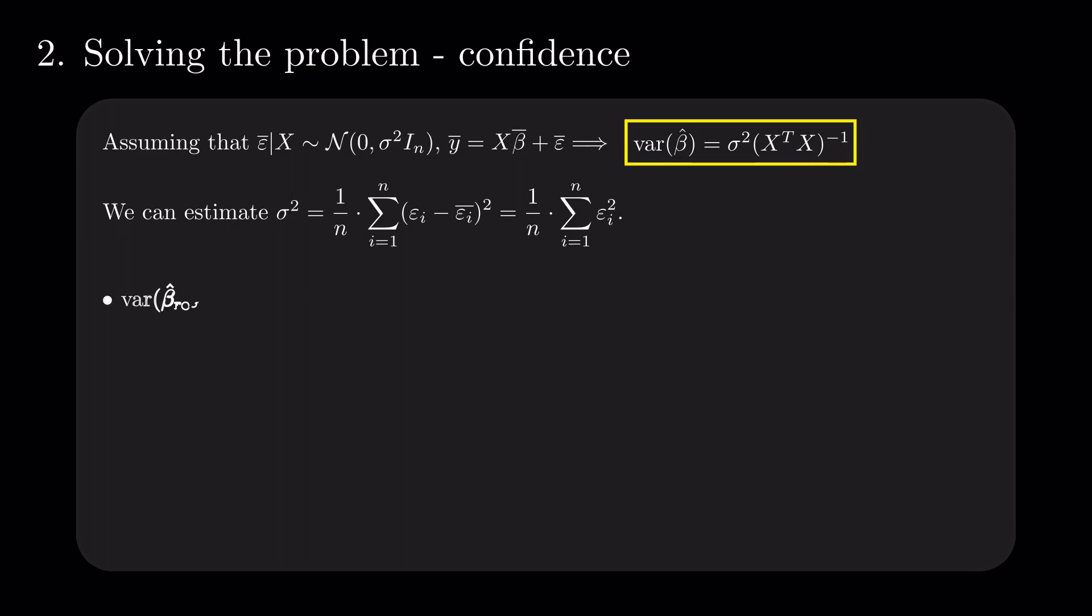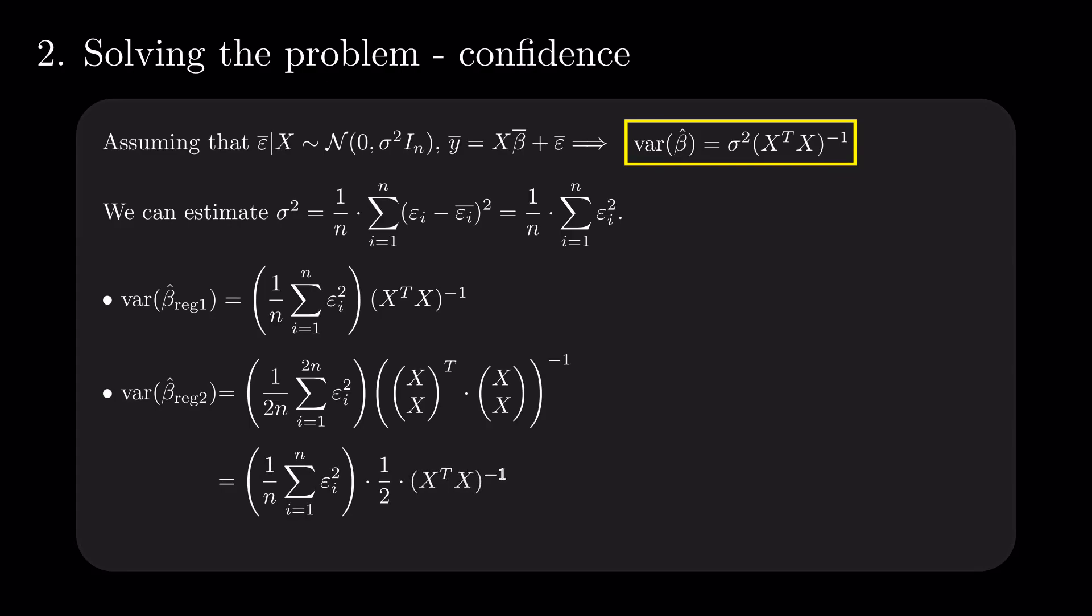Now, we can compare the estimates variance between the two regressions. The standard deviation of the errors is the same since we doubled the sum and the denominator changes from n to 2n. The product of the matrices is the same as the one we computed before, so the variance is halved.